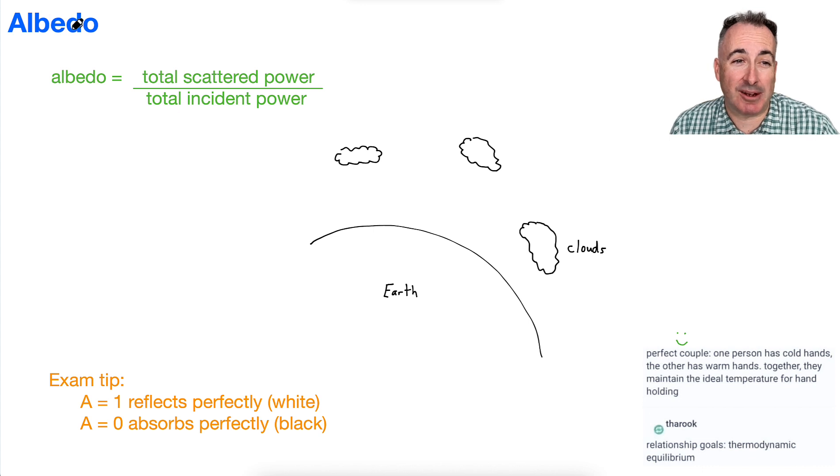Okay, so let's talk about albedo. Albedo is defined in your data booklet as the total scattered power over the total incident power.